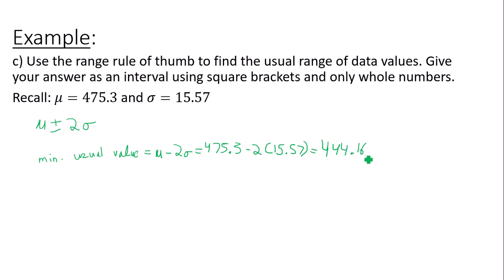You have to be careful how you round this, because if I win 444 games, that is considered unusual because it falls below this minimum usual value. You will always round up for minimum usual value, so 445 would be the minimum usual value.